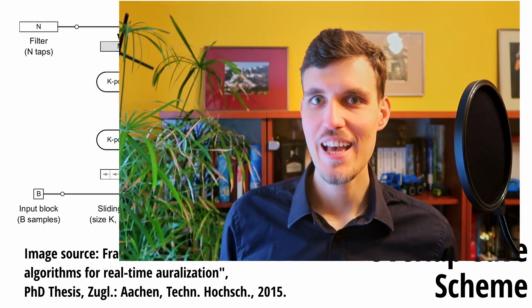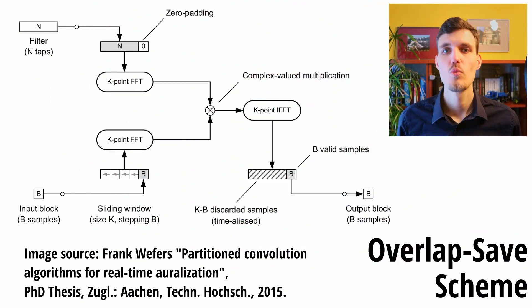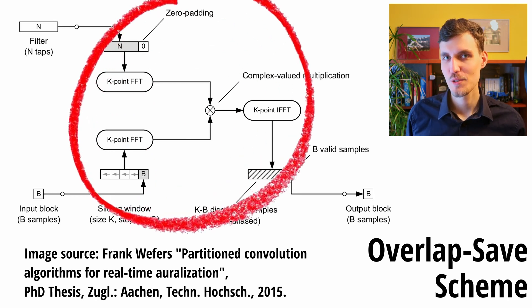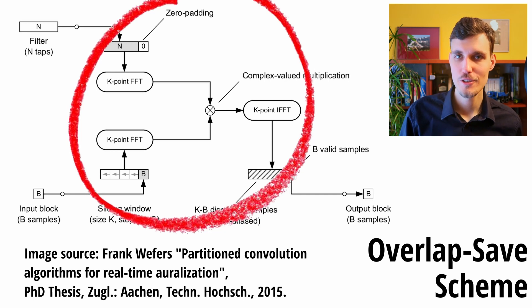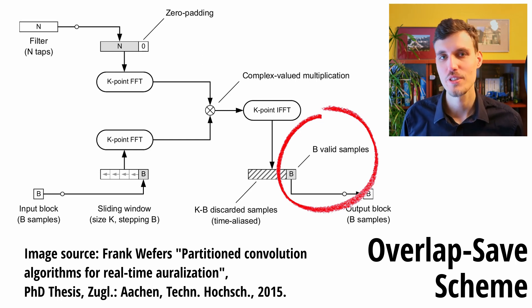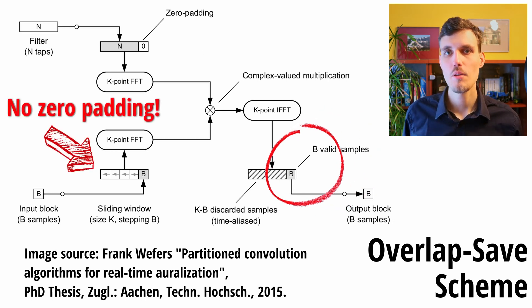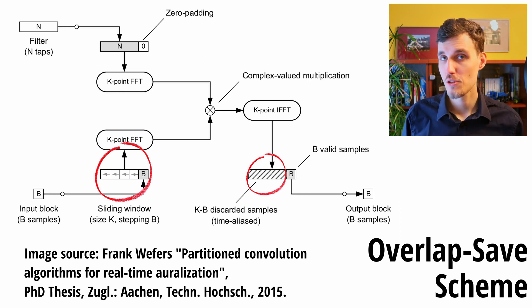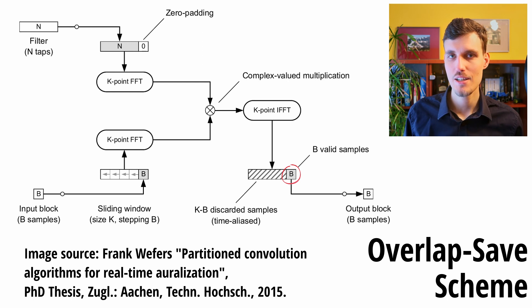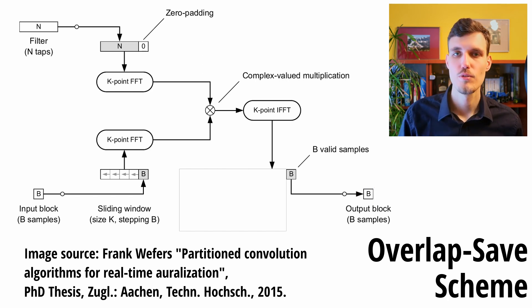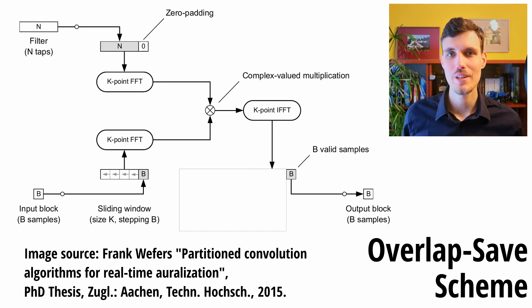In the overlap-save scheme, instead of storing the results of the previous convolutions, we store the input blocks — and we store as many of them so that the circular convolution between the stored blocks and the filter yields at least B valid samples at the end of our circular convolution procedure. Obviously, because we don't have any zero padding, some of the samples of the output need to be discarded. But by having enough input blocks stored, we make sure that at least B samples are valid in the output. We output these B samples and discard the rest. In this way, we don't have to store the previous convolution results, nor do we have to add them up in any way.